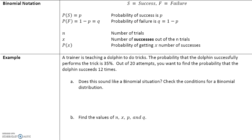Here's the notation for binomial distribution: S is success, F is failure, p is the probability of success, and q is 1 minus p, which is the probability of failure. N is the number of trials, x is the number of successes out of the n trials, and P(x) is the probability of getting x number of successes.